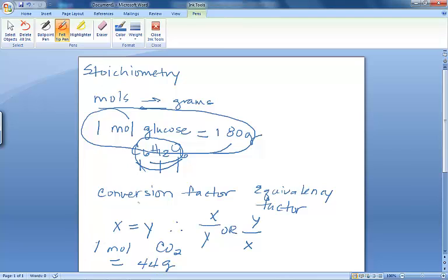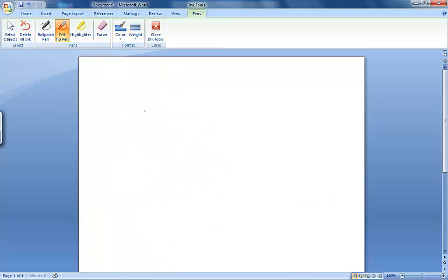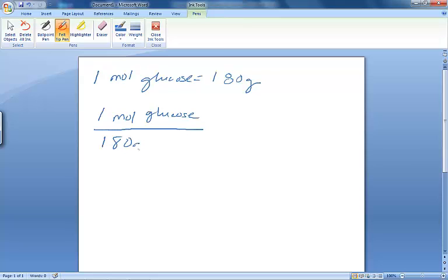This, as well, is a conversion factor. So how would we write these conversion factors? Let's take a look. We would look at them as either one mole glucose equals 180 grams. I could also write that as one mole glucose over 180 grams. Or I could say the 180 grams is equivalent to the one mole of glucose.